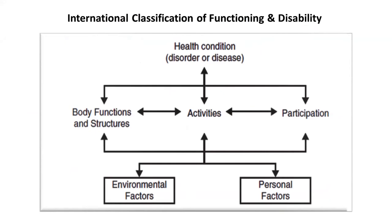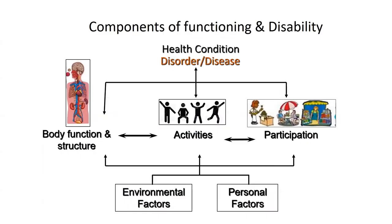The picture describes those domains. A person maintaining normal health has normal body functions and structures, performs various activities, and participates in life events. Environmental and personal factors can influence health positively or negatively. If someone has a disorder or disease, the body functions and structures will have impairments, resulting in activity limitation and participation restriction. Environmental and personal factors influence the diseased health condition as well.